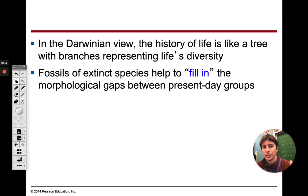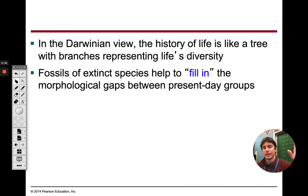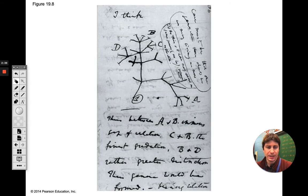What Darwin did — and we talked about this last time — is he used the species that were living and then the species found in fossils, even further down in the strata, to fill in all the gaps and relate the ones still living to the ones that were way, way, way extinct.